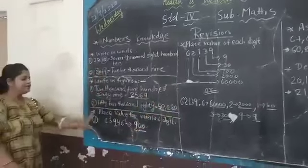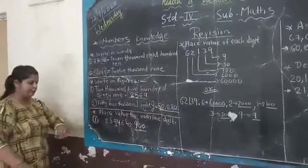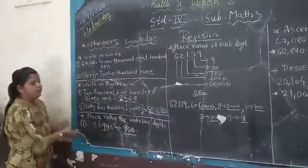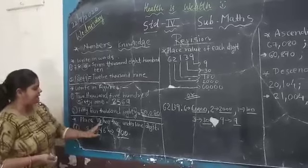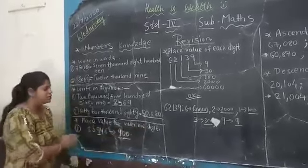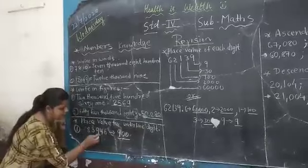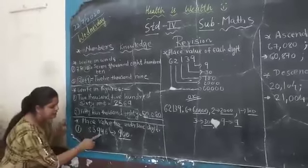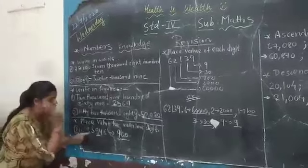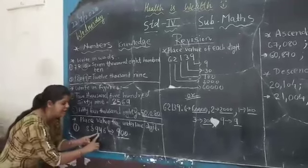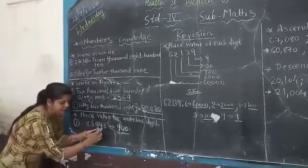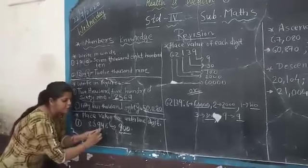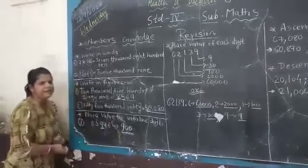Now, our next exercise is place value. Place value we can do two types. If the heading is given, place value for underline digit. So in the given number, where is underline? Underline at 9. So what is the place value of 9? Check. At this place, it is unit, tens and hundreds. So its place value is 900.